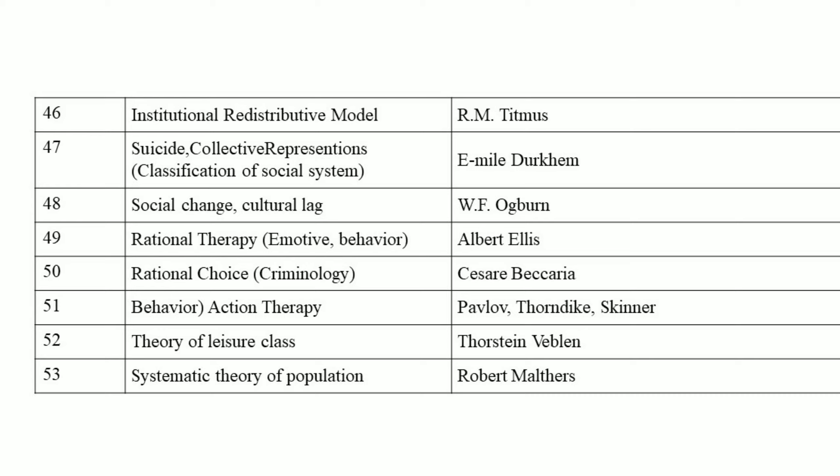Labeling theory of crime developed by Becker. Next one: institutional redistributive model — propagator was R.M. Titmuss. Next: suicide, collective representation, and classification of social systems — put forward by Émile Durkheim.